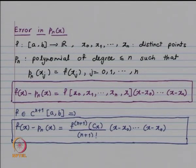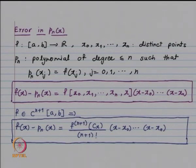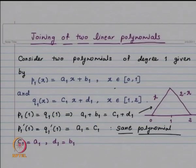Today we replace the interval [a,b] by each subinterval [t_i, t_{i+1}], and on each subinterval we fit a polynomial of degree less than or equal to k, joining these polynomials together.